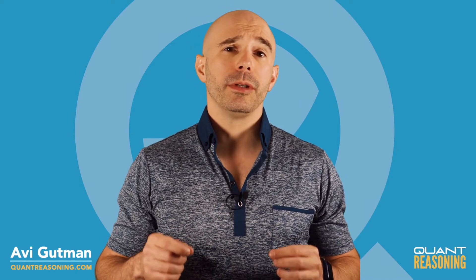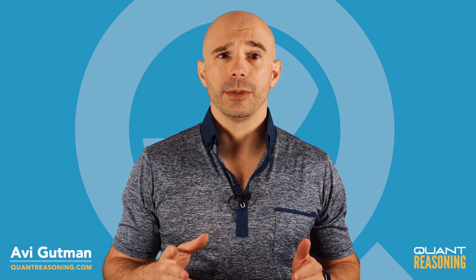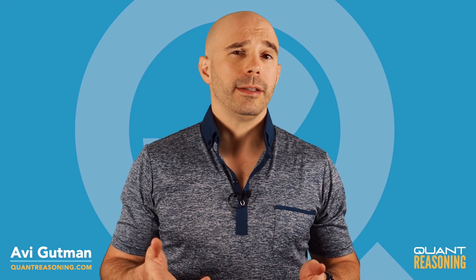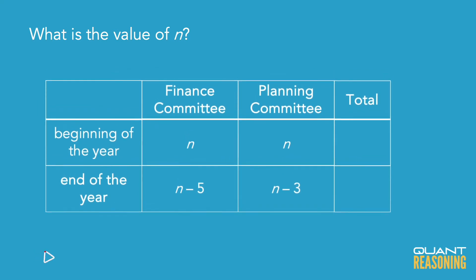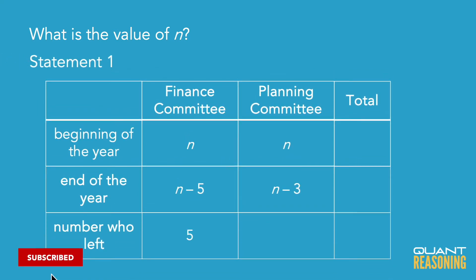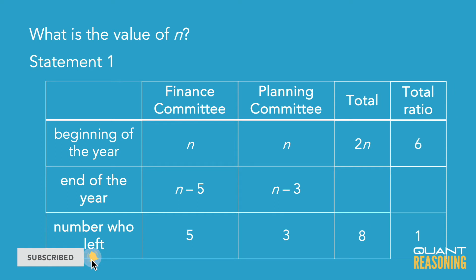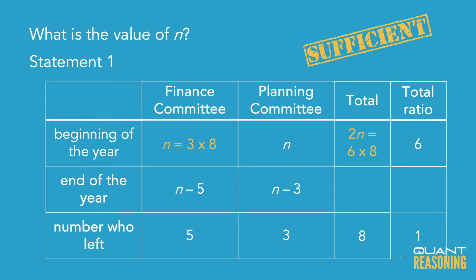Statement 1 is talking about the total number of people who left the committees. That's 5 plus 3, which is 8. They're saying that 8 is 1/6 of the total number of people at the beginning of the year, which would have been 2n. So if 2n is 6 times as much as 8, then n would be 3 times as much as 8. Can we solve for n? Yes. This statement is also sufficient on its own, and therefore the correct answer is D.